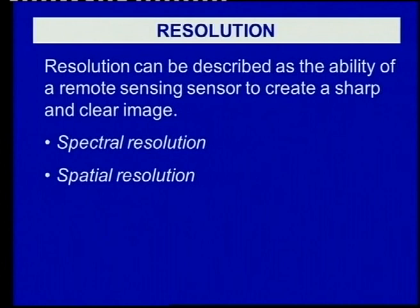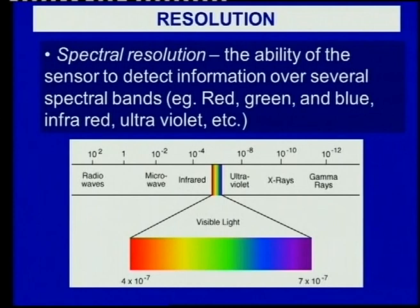Spectral resolution is the ability of the sensor to detect information over several spectral bands — in this case, the red, green, blue, infrared, and ultraviolet. We must also remember our visible spectrum, which is the red, green, and blue. These make up the defined areas of the electromagnetic spectrum in which these sensors detect all geographic objects.